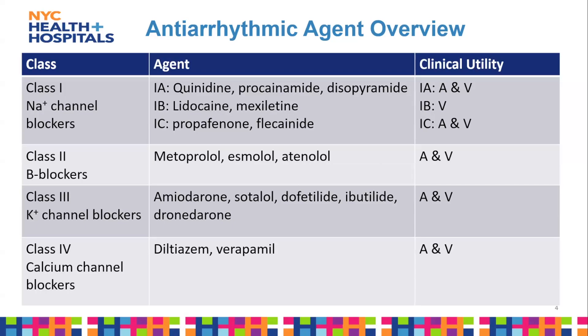Class 2 antiarrhythmics are your beta blockers — the main ones you'd use are metoprolol and esmolol, which can be used in both atrial and ventricular arrhythmias. Class 3 are your potassium channel blockers, mainly amiodarone, which are known to prolong the QTc interval. Class 4 are calcium channel blockers — diltiazem and verapamil — used in both atrial and ventricular arrhythmias.